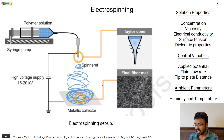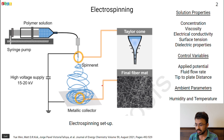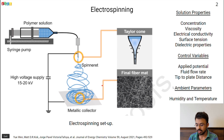The voltage that we apply, the fluid flow rate, and the spinneret-to-collector distance also affect the fiber mat quality. Additionally, the ambience, humidity, and temperature also have an effect on the fiber mat.